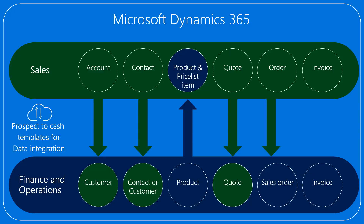For sales order, you can create sales orders in Sales and synchronize them to Finance and Operations. Once activated, they will flow to Finance and Operations. Updates on existing sales orders and all new sales orders from Finance and Operations will be synchronized back to Sales, which keeps the seller updated about fulfillment and order status.